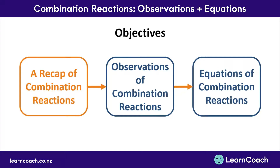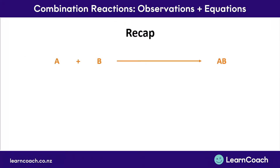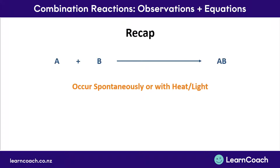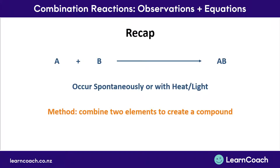A combination reaction is a reaction where you take two separate substances and combine them together to create a brand new substance. For example, we take two elements and add them together to form a new compound. Combination reactions occur spontaneously or are driven by external factors such as heat or light energy. When describing a method of combination reactions, we focus on three things: what the substrates are, how the reaction happens, and what products are formed.